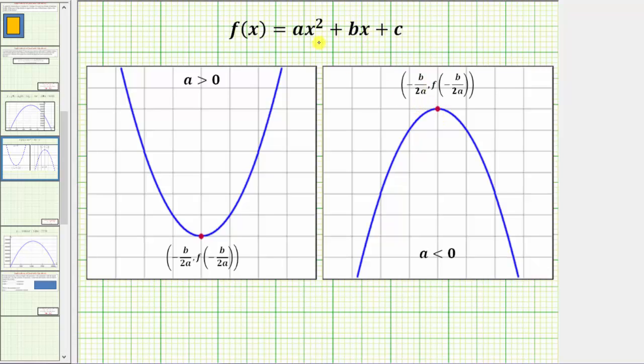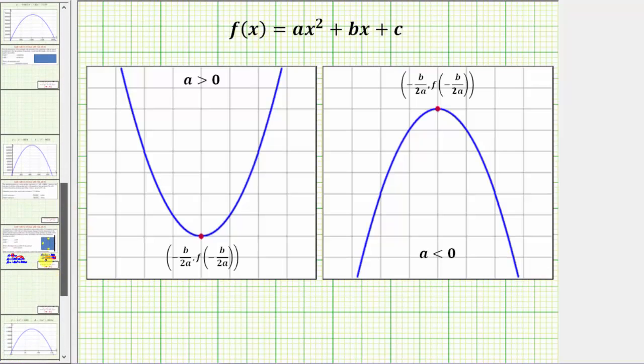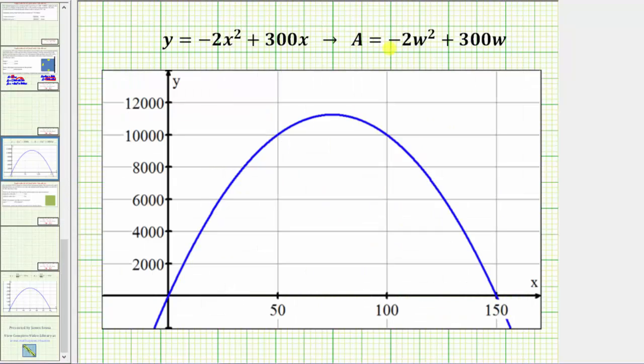Of course, for our equation, x is equal to w, and f of x is equal to a. Looking at our specific graph for our area equation, we have a equals negative 2w squared plus 300w, and the parabola looks like this.